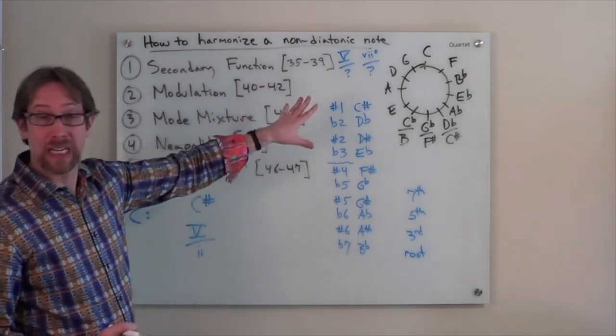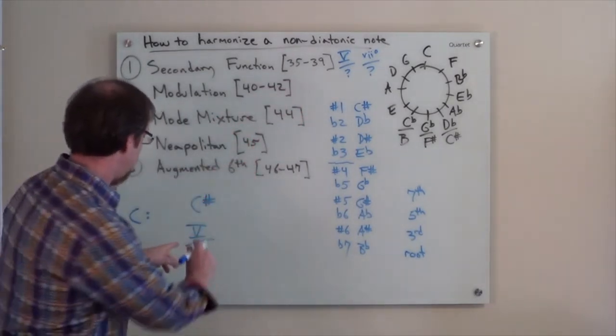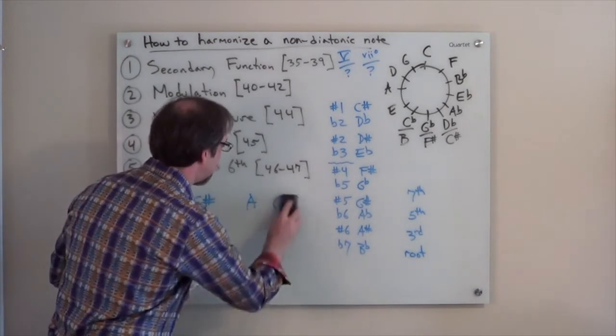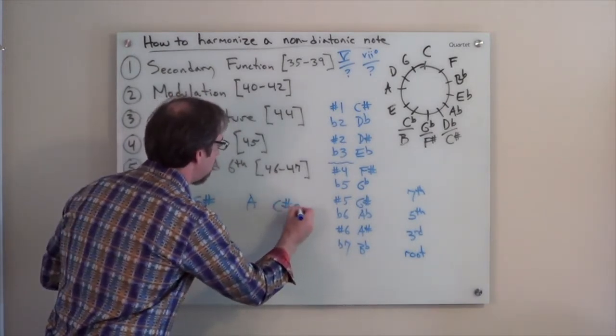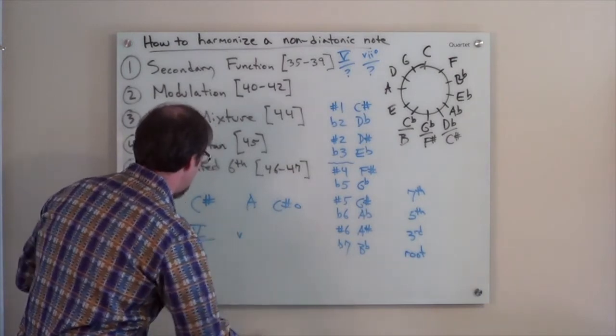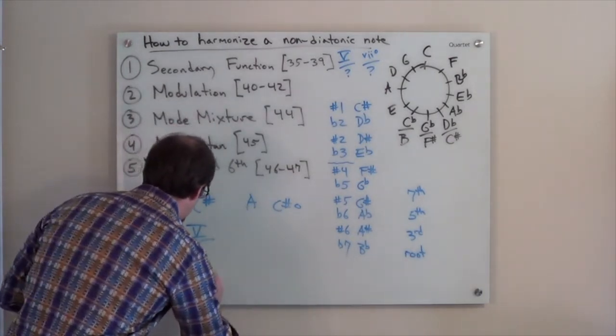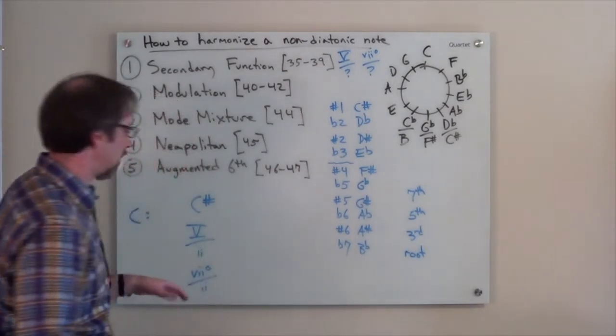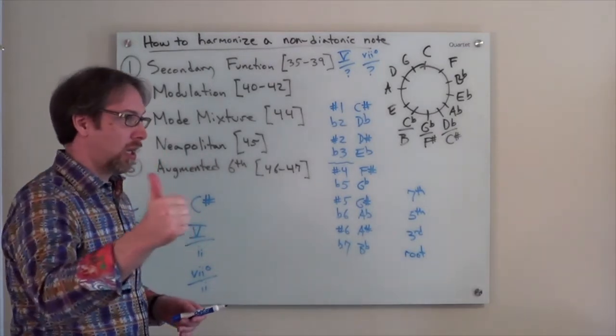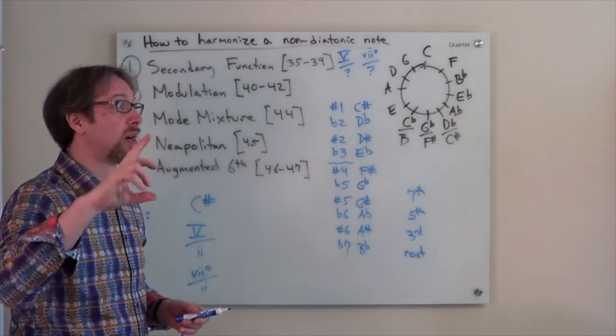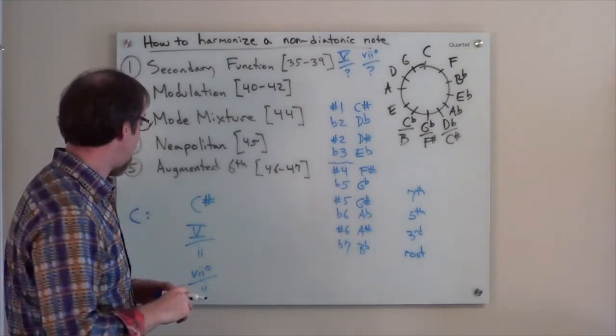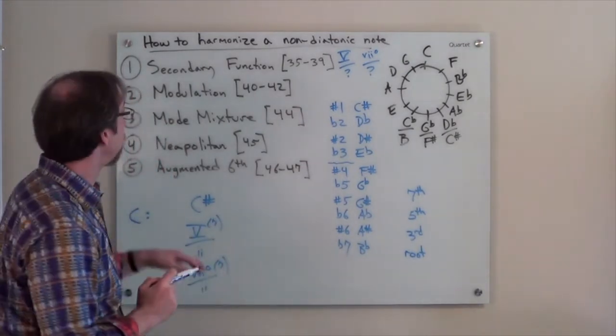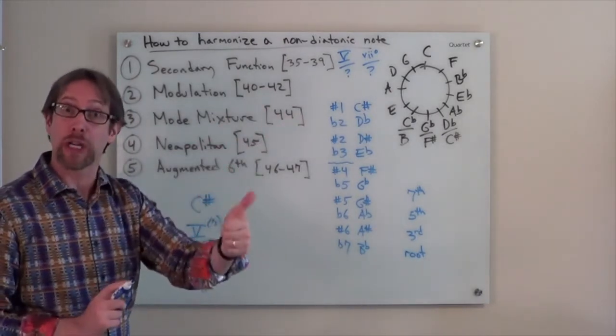Well, what about other secondary functions like the seven diminished? This A major triad is very related to a C sharp diminished triad. That is the corresponding diminished. So that would mean that we could have a seven diminished of two as well. And since that would be the root of that seven diminished, it could be seven diminished and then seven diminished six or seven diminished seven or an inversion of that. So I'm going to put the seven here in parentheses in both cases because we know that's an option. So secondary functions, it works. It gets our job done.